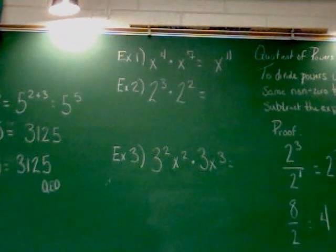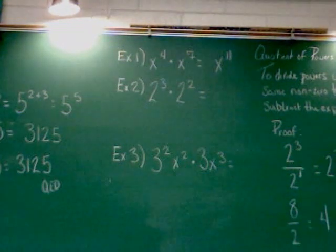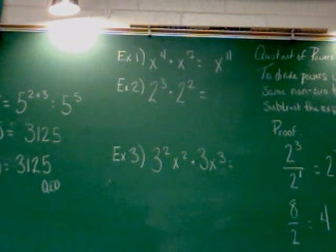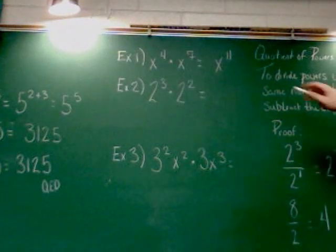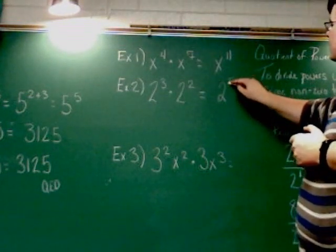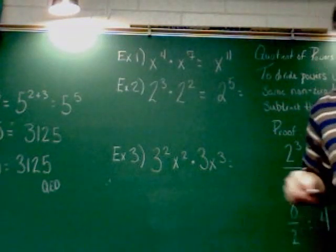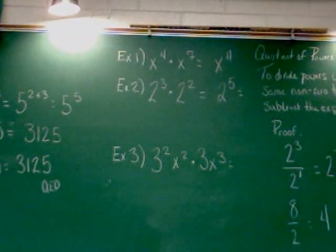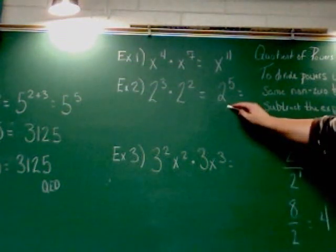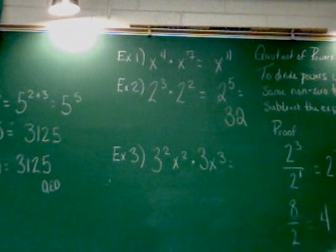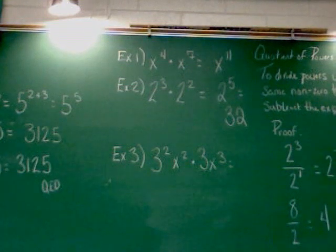Let's try the next one. 2 to the 3rd times 2 squared. Big numbers are both 2's, so we can just add the exponents together. 3 plus 2 is 5. So this is 2 to the 5th. Now, you can simplify 2 to the 5th, though. Not a hard thing to simplify. 2 times 2 is 4. Times 2 is 8. Times 2 is 16. Times 2 is 32. But you can use a calculator to do it.